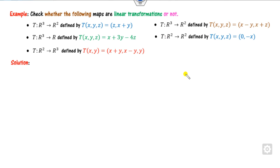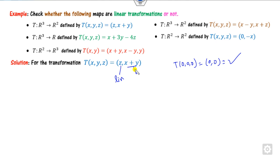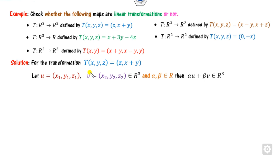Now look at these five examples. First, check whether any of them is non-linear. For the first part, T of (0, 0) is satisfied. Also, the components are linear functions and x plus y is also linear, so we need to check the transformation properties.